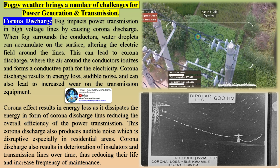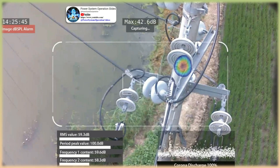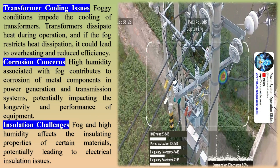Consequences of corona losses: reduced transmission efficiency — the energy loss due to corona discharge represents a portion of power not delivered to the load, reducing overall transmission efficiency. Increased operating costs — the energy loss to corona discharge needs to be compensated by generating additional power, leading to higher electricity generation and transmission costs. Corona discharge can also generate audible noise and electromagnetic interference, impacting nearby communication systems. Foggy weather brings challenges for power transmission — when fog surrounds the conductors, water droplets accumulate on the surface, altering the electric field around the lines, leading to corona discharge, energy loss, audible noise, and increased wear on transmission equipment.